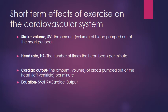Short-term effects of exercise on the cardiovascular system. Key terms you need to know: stroke volume (SV) is the amount of blood pumped out of the heart per beat; heart rate (HR) is the number of times the heart beats per minute; cardiac output is the volume of blood pumped out of the heart per minute. The equation for cardiac output is: SV × HR = cardiac output.